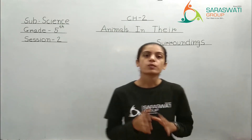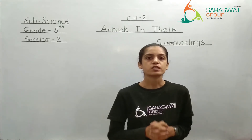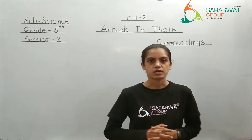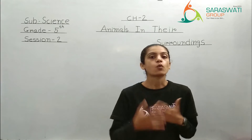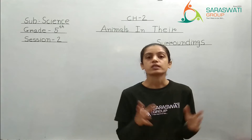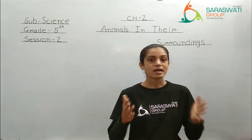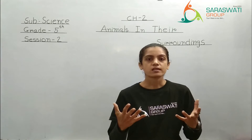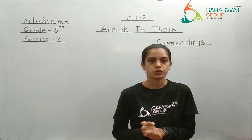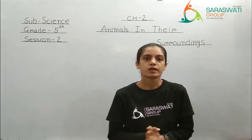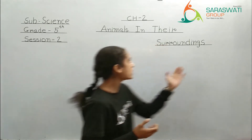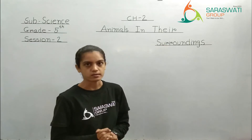Now kids, today we are going to start with the explanation of chapter number 2. In the last session of chapter number 2, we studied the hard words or vocabulary words of this chapter. Now we are going to start with the explanation. So before I start, you all should have your textbook. Please open chapter number 2. The chapter's title is 'Animals in Their Surroundings.'